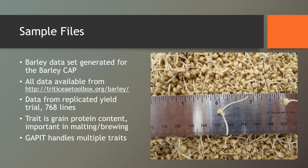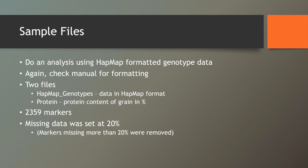I've included a few sample files on the website. These were all generated from the Barley CAP, similar to the SolCAP. The data is available from the Triticeae Toolbox. The dataset we'll be analyzing today is from a replicated yield trial with 768 lines, comprised of eight separate breeding programs each submitting 96 lines plus 10 check lines. The trait we'll be looking at is grain protein content, which is extremely important for malting and brewing. GAPIT does handle multiple traits per run.